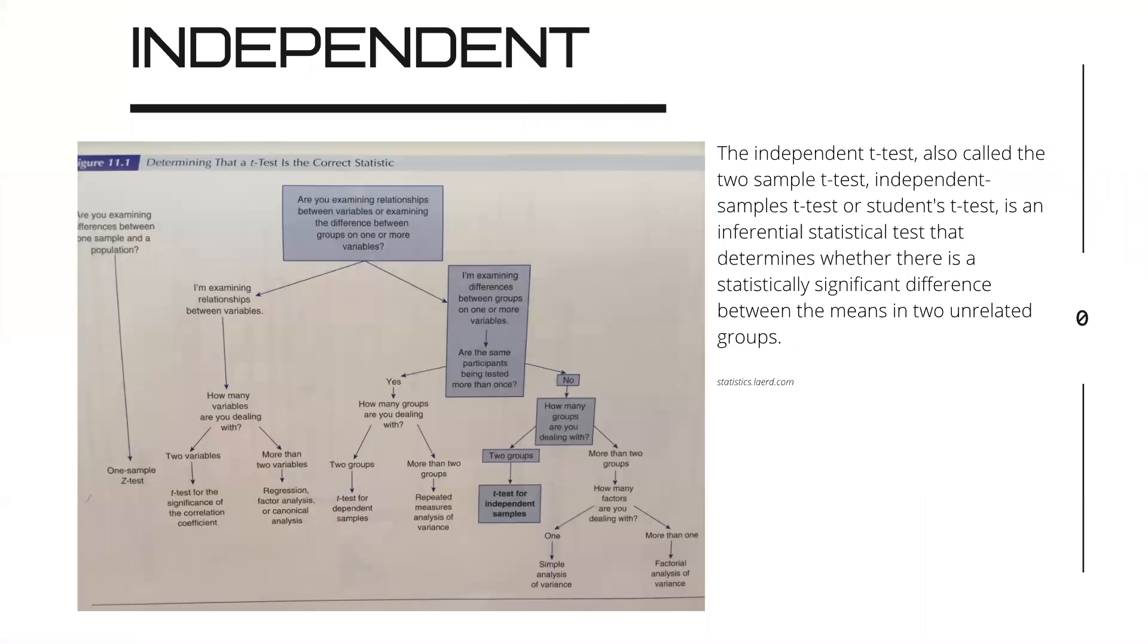We're going to begin with independent T-Test. Independent T-Test is also called two-sample T-Test, independent samples T-Test, or Student's T-Test. It's an inferential test that determines whether there is a statistically significant difference between the means of two unrelated groups.